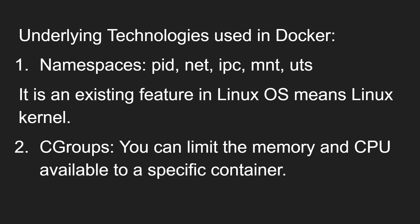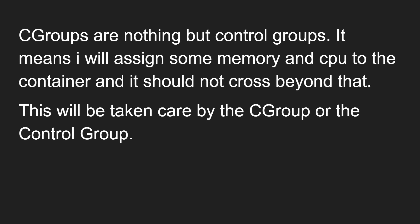Now let's look at the underlying technologies used in Docker. The first one is namespaces — an existing feature in the Linux kernel. These are: PID, Net, IPC, Mount, and UTS. These are all namespaces used in Linux and used in Docker. The second is cgroups — control groups. Using control groups, you can limit the memory and CPU available to a specific container. It means you assign some memory and CPU to the container, and it should not exceed that limit — that is taken care of by the control groups.